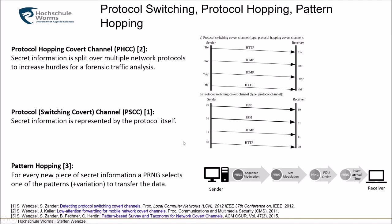Going back to patterns: I described pattern variation, where we apply the same pattern to different protocols. But we can also perform pattern hopping, which is a combination of pattern variation with protocol switching covert channels. For every new secret message, a pseudo-random number generator (PRNG) chooses a pattern — for instance, sequence modulation, then size modulation, then PDU order, then inter-arrival times, and so on. This can also be applied to different protocols, mixing patterns and protocols together.